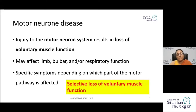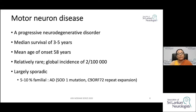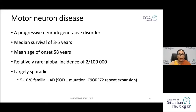Motor neuron disease involves a selective loss of voluntary muscle function. It is a progressive disorder with a median survival of around three to five years. The disease onset occurs in the elderly, usually in the sixth decade, with risk increasing until around 75 years of age. It is the third commonest neurodegenerative disorder, though the incidence itself is rather rare.